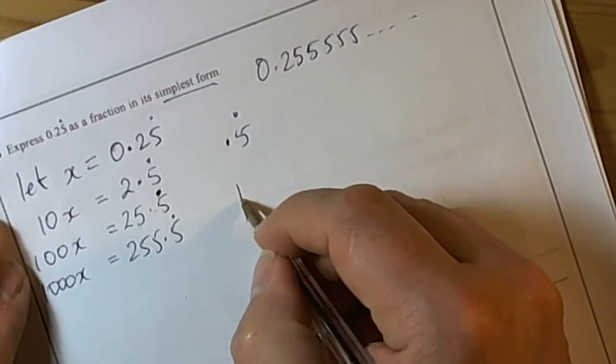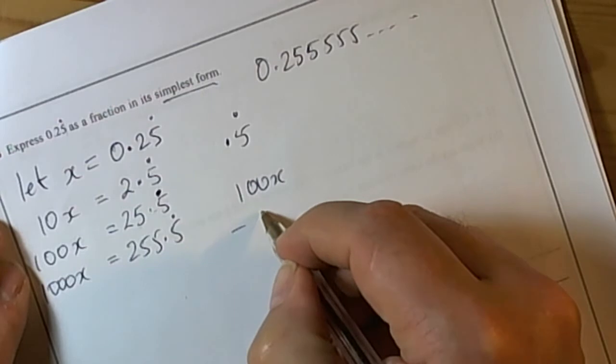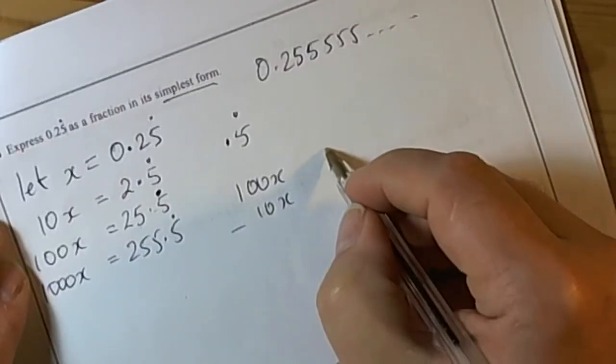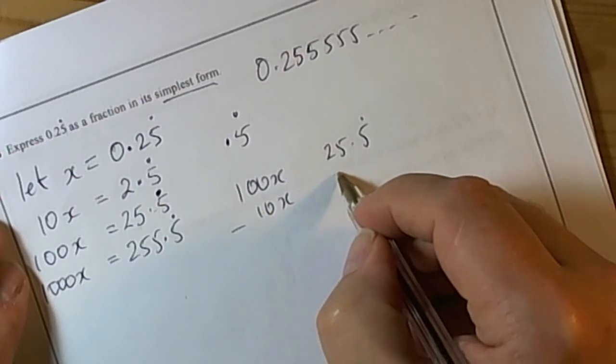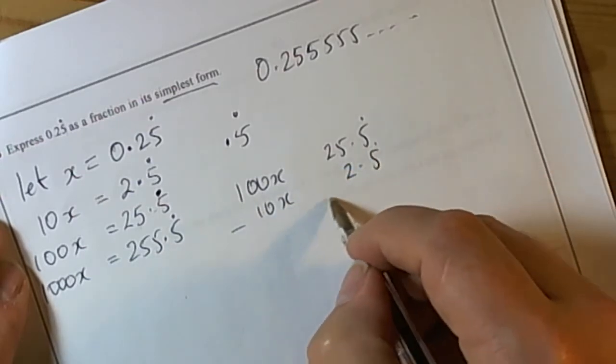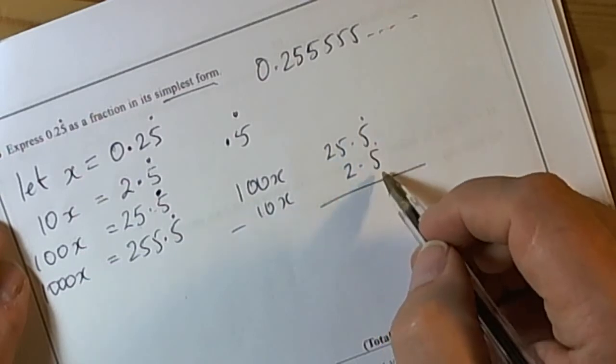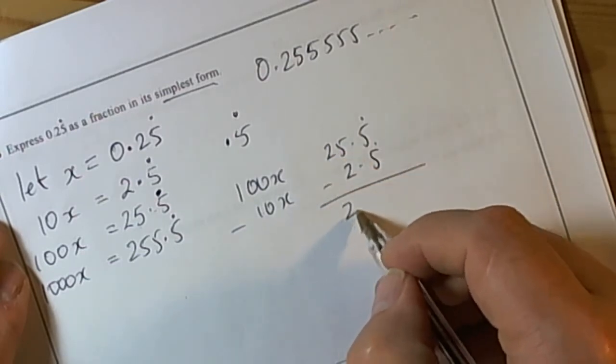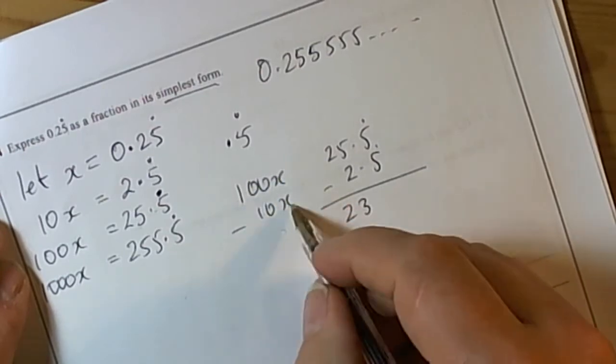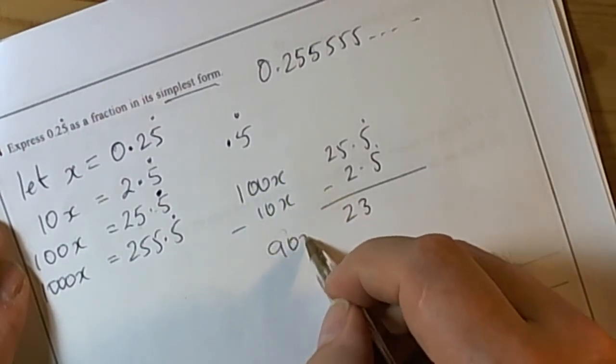So we're going to do 100x subtract the 10x answer. We've got 25.5 recurring subtract 2.5 recurring - this subtraction means the recurring part is gone. We've got 25 take away 2 is 23, and 100x take away 10x is 90x.